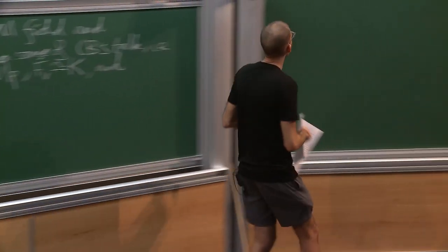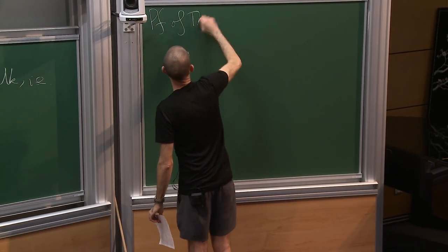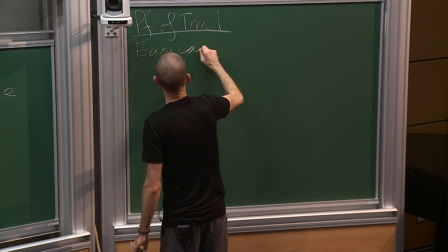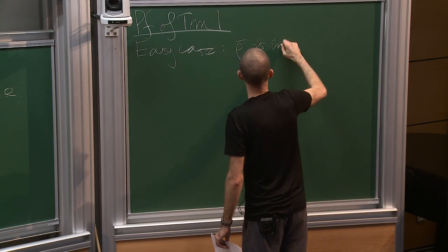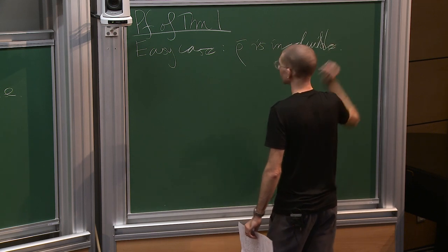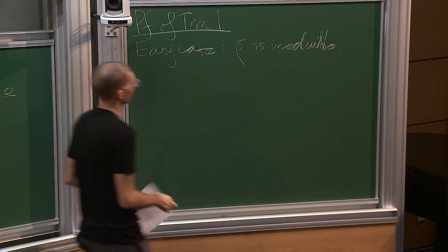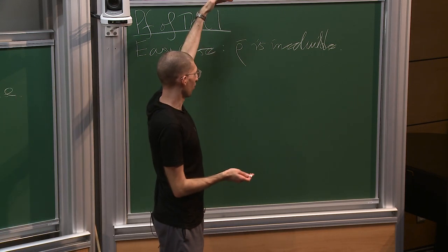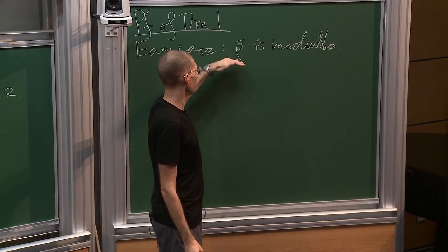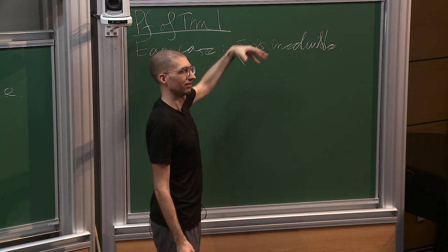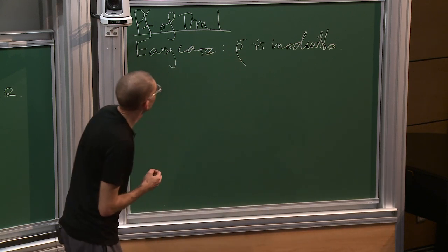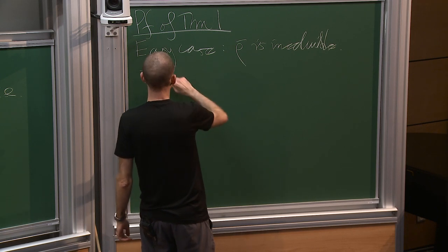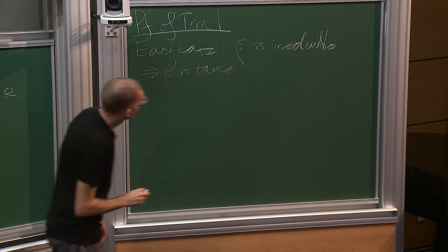Let me say something about the proof of theorem one. The easy case is when rho-bar is irreducible. Wild inertia is the pro-p subgroup of inertia and it must act with some fixed vector, since a group of p-power order acting on something of p-power order has a fixed point. Since we're assuming irreducibility, wild inertia acts trivially, so rho-bar is tame. For a tame representation you have the Frobenius and tame inertia acting in an explicit way.